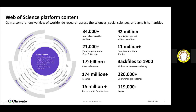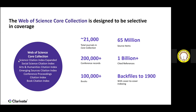As researchers, browsing through this content alone will already save you a lot of time, because this content has already been curated for quality and impact — relevant content most significant and beneficial to the researcher community. On the Web of Science core collection, we have four indexes: the Science Citation Index Expanded, the Social Science Citation Index, the Arts and Humanities Citation Index, and the Emerging Sources Citation Index. We also have Conference Proceedings and Book Citation Index. In total we cover around 21,000 journals, 200,000 conference records, and 100,000 books — giving access to almost 1 billion cited references.